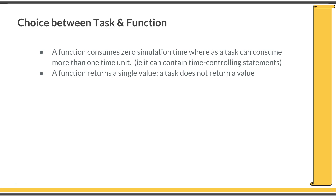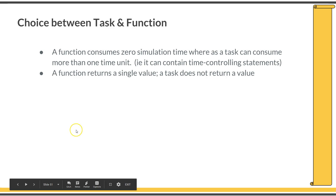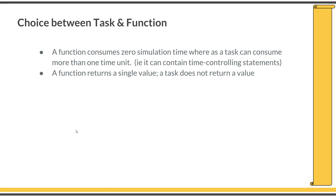When you want to abstract a block of code into a subroutine that consumes simulation time, you must use a task. A typical example is a driver — you modularize your code so certain functionalities are placed into specific subroutines that consume time, and you call those tasks at a higher level. To summarize this session: you have learned how to write tasks and functions and the differences between them. Remember that functions are synthesizable and commonly appear in RTL code, but tasks are generally not synthesizable because they consume time.